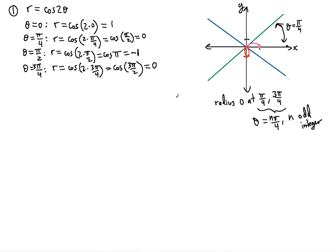Continuing to complete the full graph: at θ = π, r = cos(2π) = 1. Since the radius is non-negative and the angle is π (the negative x-axis), we stay loyal to that angle and place the point at -1 on the x-axis. Don't be confused — because the radius is positive here, we remain at the angle π.